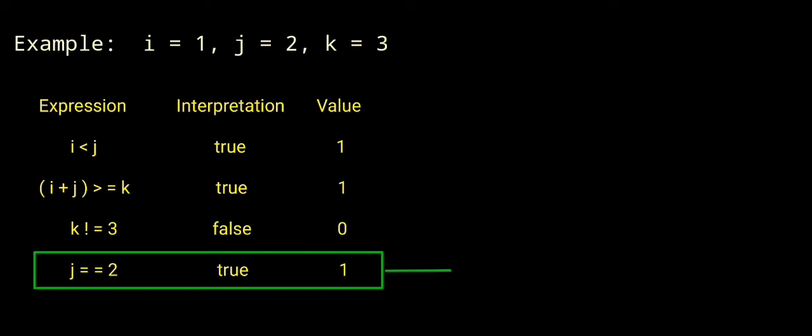Next expression: j equal to 2. j value 2, so 2 equal to 2 — condition is true. Interpretation is true, value 1.